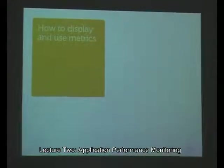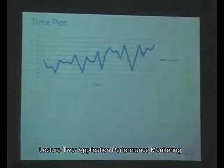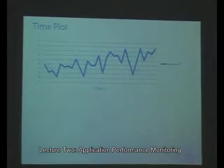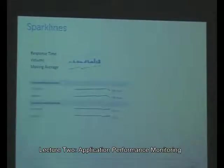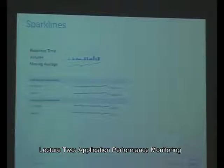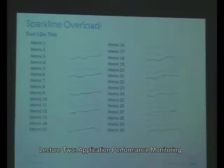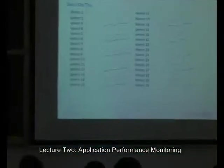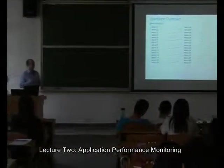How do we display and use metrics? First: time plot — that's what we've been looking at, the standard way to show a metric. You'll be using time plots a lot. You could also do a spark line, introduced in 2004 by Edward Tufte — it's an intense word-sized graphic. People now throw lots of spark lines around, but don't do that; it loses its meaning. Use a spark line in a table to show a trend, but it's not the best way to show all your data.